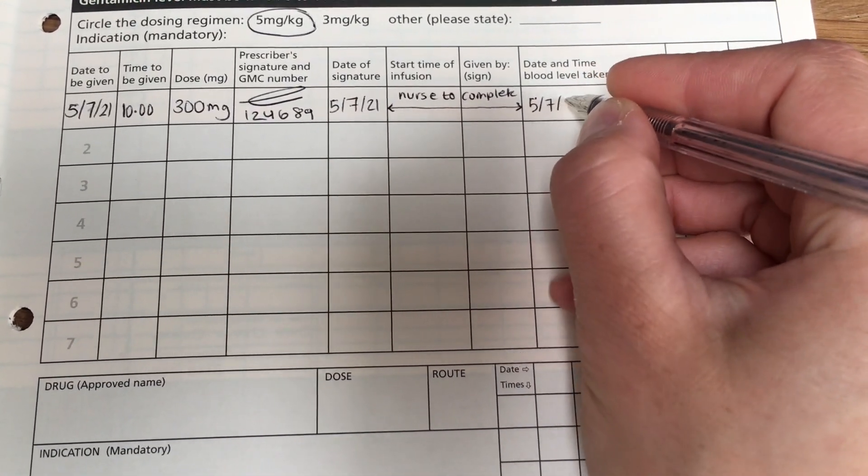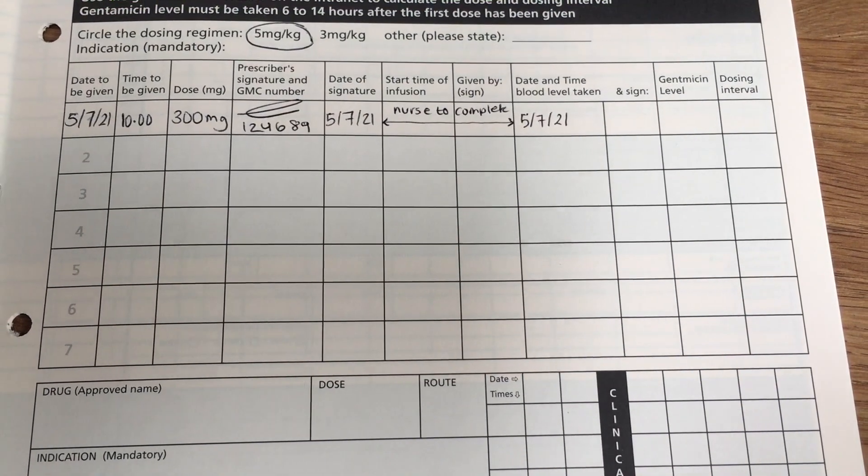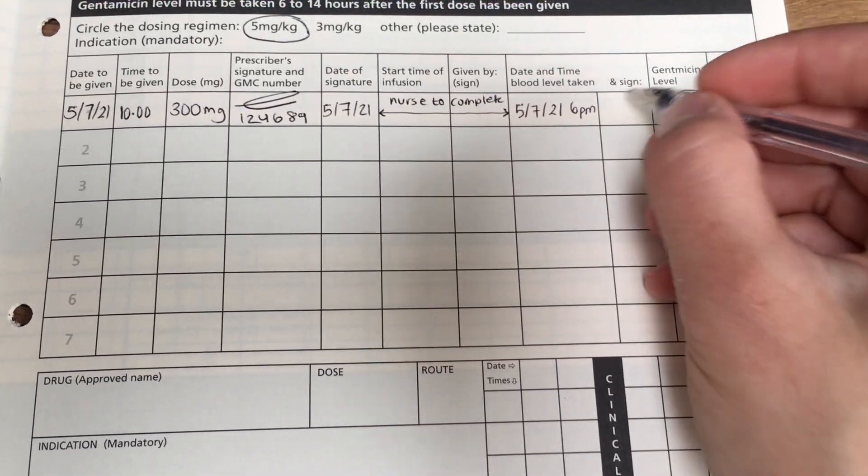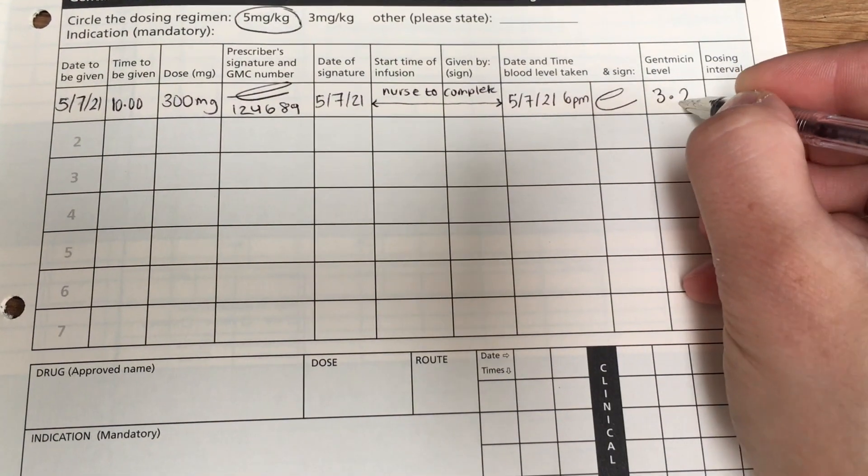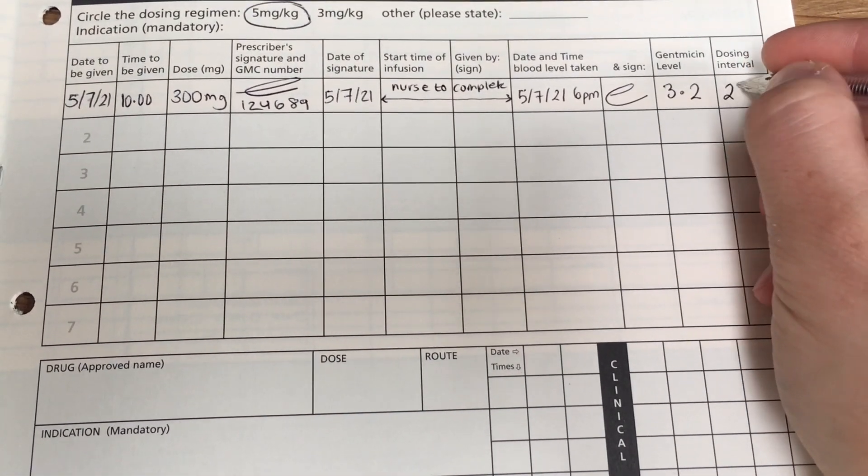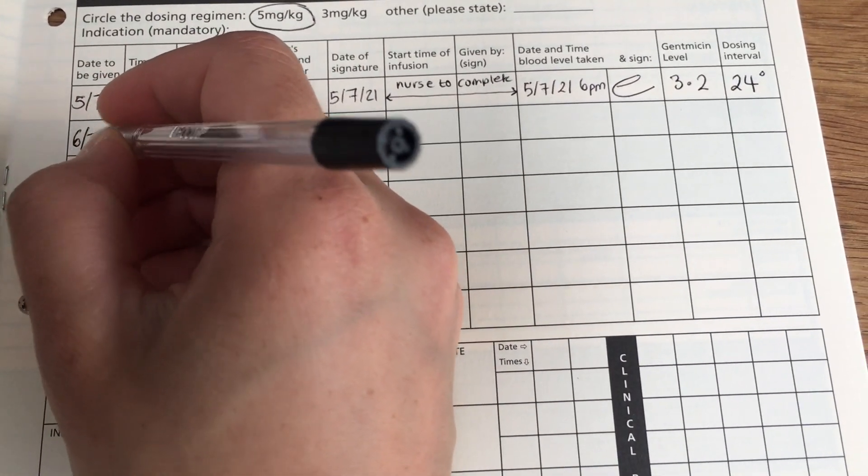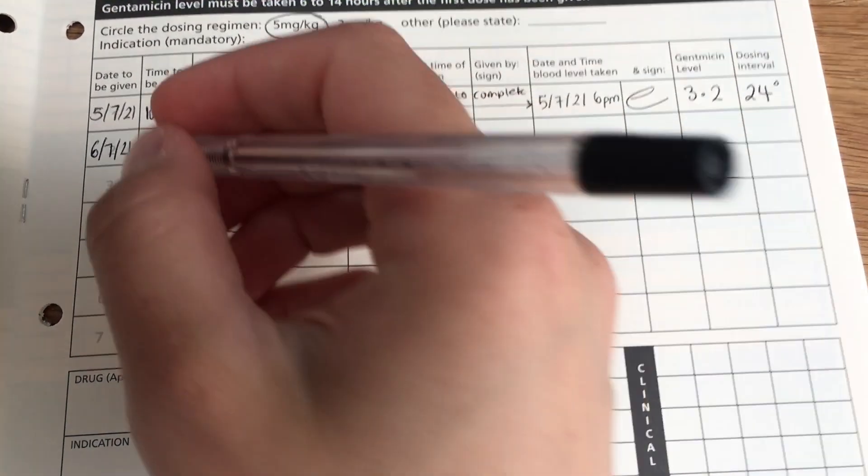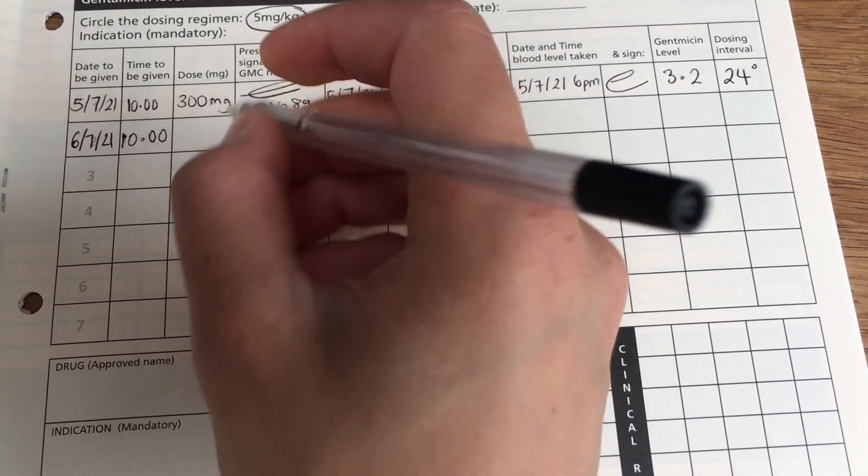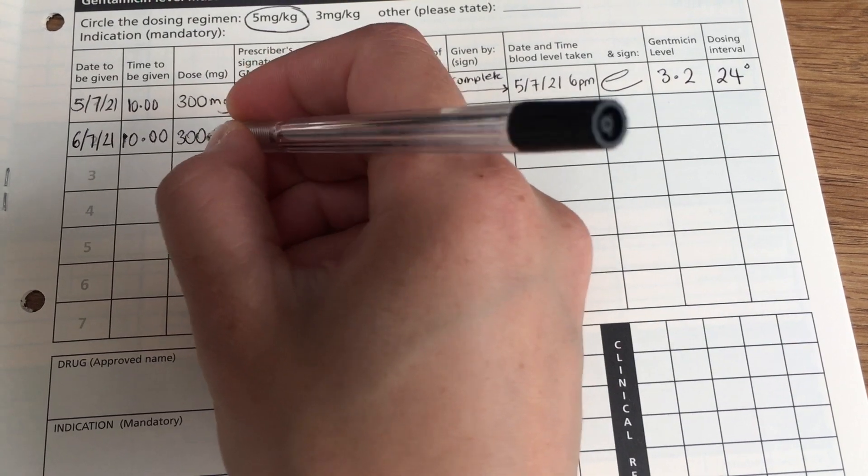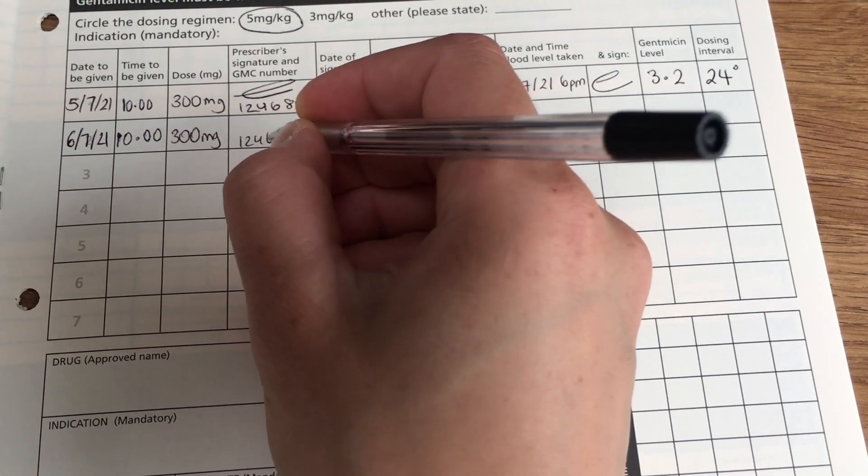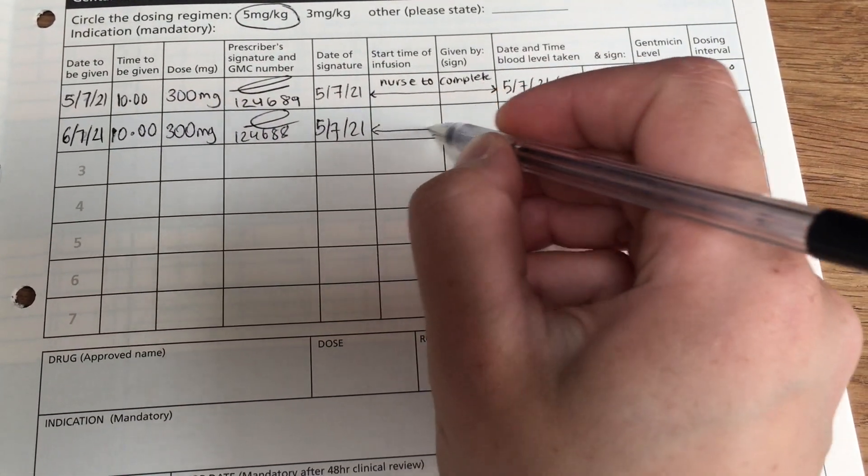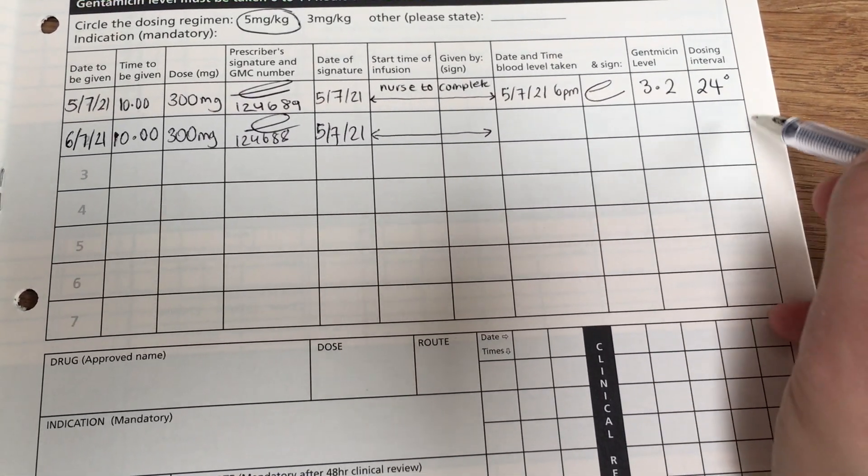As you can see, the first dose was given at 10 o'clock in the morning, and it was 300 milligrams, for a dosing regimen of 5 milligrams per kilogram. On the 5th of the 7th, they had a sample collected at 6 p.m., so you want to know when it was collected. I sign it, and then I put what the level was. So, the level was 3.2 from the blood test. I insert this on the gentamicin calculator that I showed you, and it tells me that the next dose can be given in 24 hours. Now that I have the dosing interval, all I need to calculate is, from the last time the dose was given, so 10 o'clock in the morning, what's 24 hours plus that? And that would be 10 o'clock the next morning. So, you just put in that time, 10 o'clock in the morning, on the 6th, the dose to be given will be the same, and you put your GMC number and your signature, and the date that you actually prescribed it, and that's it. So, it might look very confusing, but it's not actually that bad.